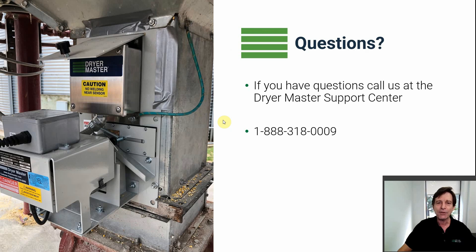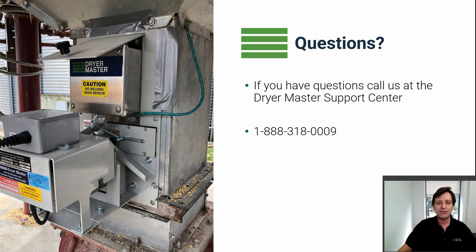That's it for the real basics of how to operate a DM510. In the second video we'll get into a little more detail, but knowing this should be enough for day-to-day operations. If you have any questions, feel free to call the Dryer Master support center at the toll-free number 1-888-318-0009. Thank you for watching, and hopefully we'll see you in the second video in this series.